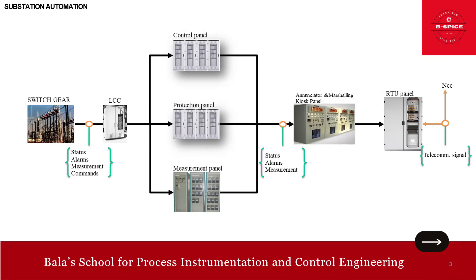The signals from the LCC go in parallel to the control panel, protection panel, and measurement panel. The control panel is responsible for switching, monitoring, automation, and annunciation. Switching means it manages the operation of circuit breakers, transformers, and other equipment. Monitoring provides real-time data on the status of various substation components. Automation implements automated processes to enhance operational efficiency, and annunciation alerts operators to abnormal conditions or faults.